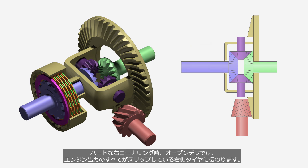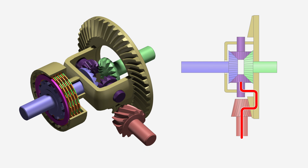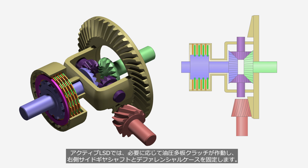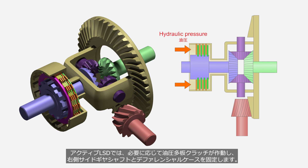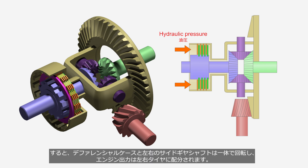During hard right cornering, in a conventional differential, all of the engine output is transferred to the slipping right-side tire. In an active differential, a hydraulic multi-plate clutch engages as needed, locking the right-side gear shaft to the differential case. As a result, the differential case and both side-gear shafts rotate as one unit, and the engine power is distributed to the left and right tires.